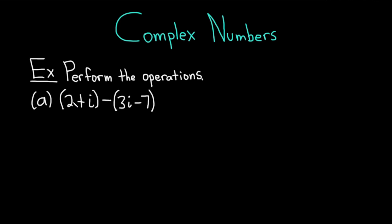In part a, we have (2 + i) minus (3i minus 7). You can drop the parentheses around the 2 plus i — there's really a 1 there, but multiplying by 1 gives the same thing. So we have 2 plus i.